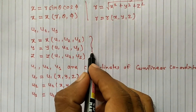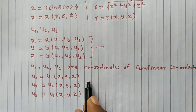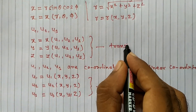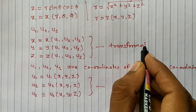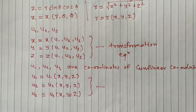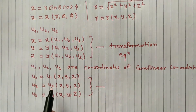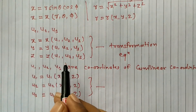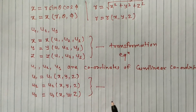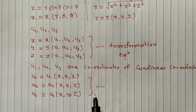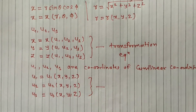These equations are the transformation equations between the Cartesian coordinate system and the curvilinear coordinate system. The curvilinear coordinate system is a general coordinate system. There are many types of coordinate systems.